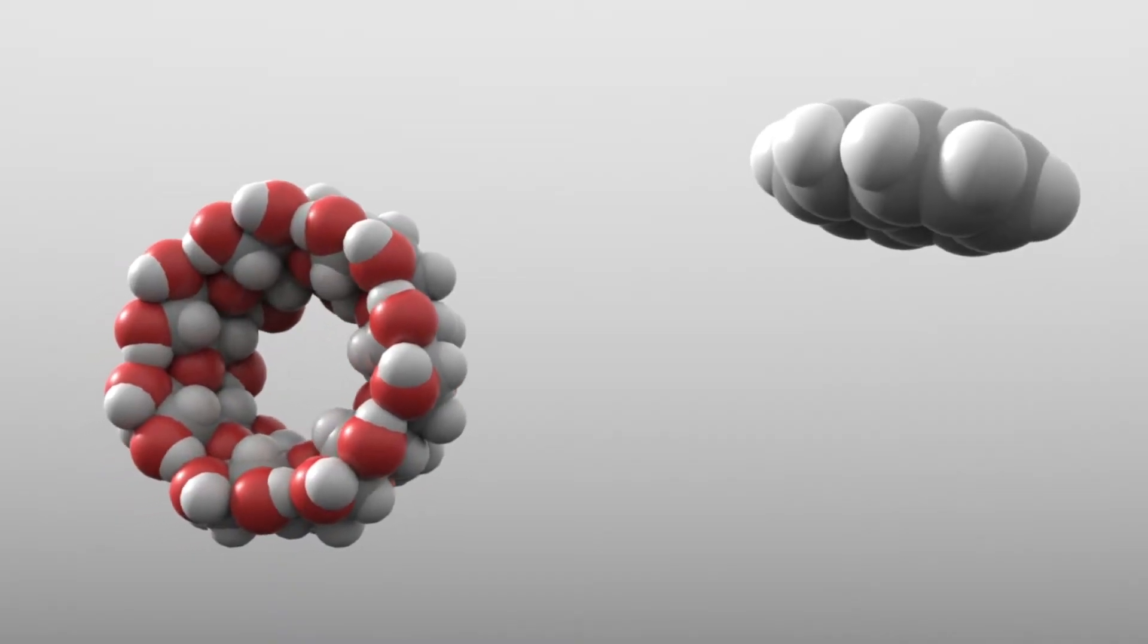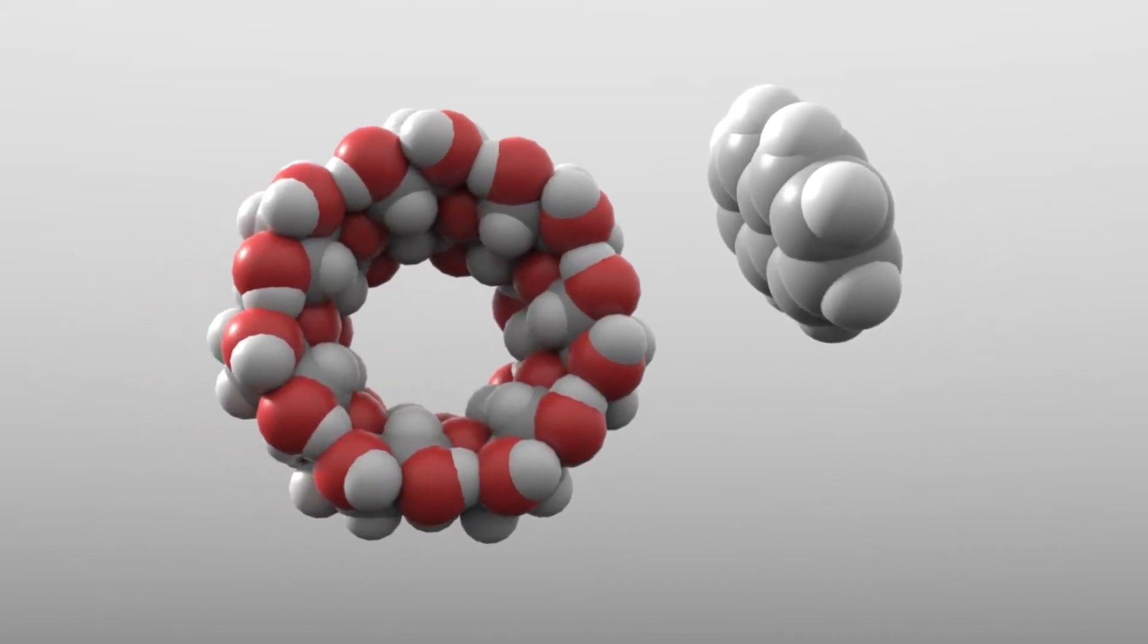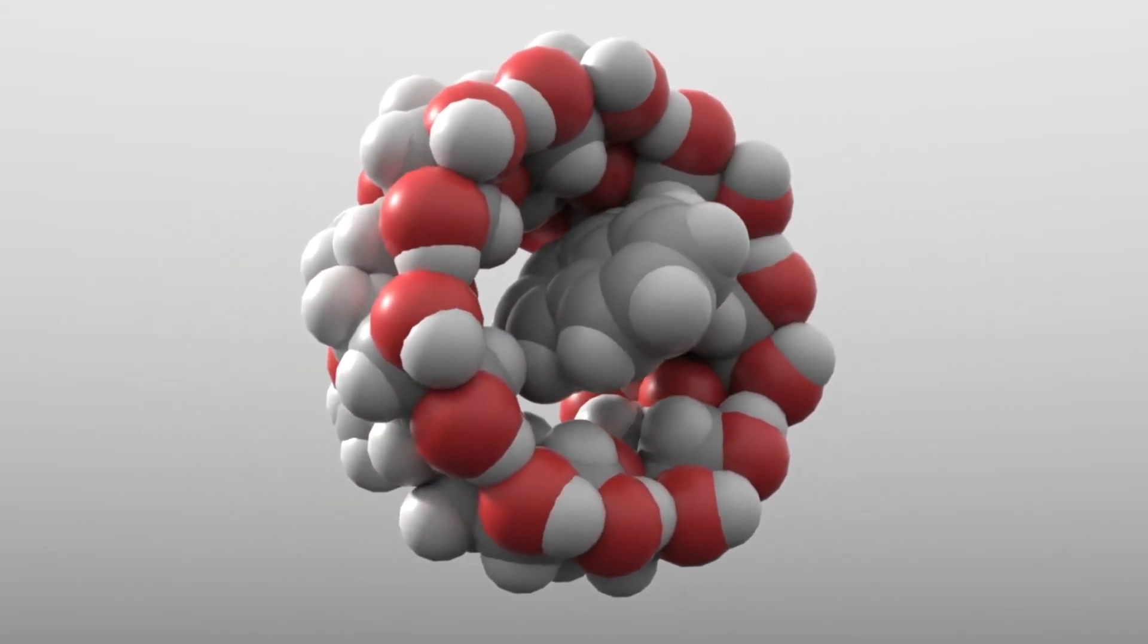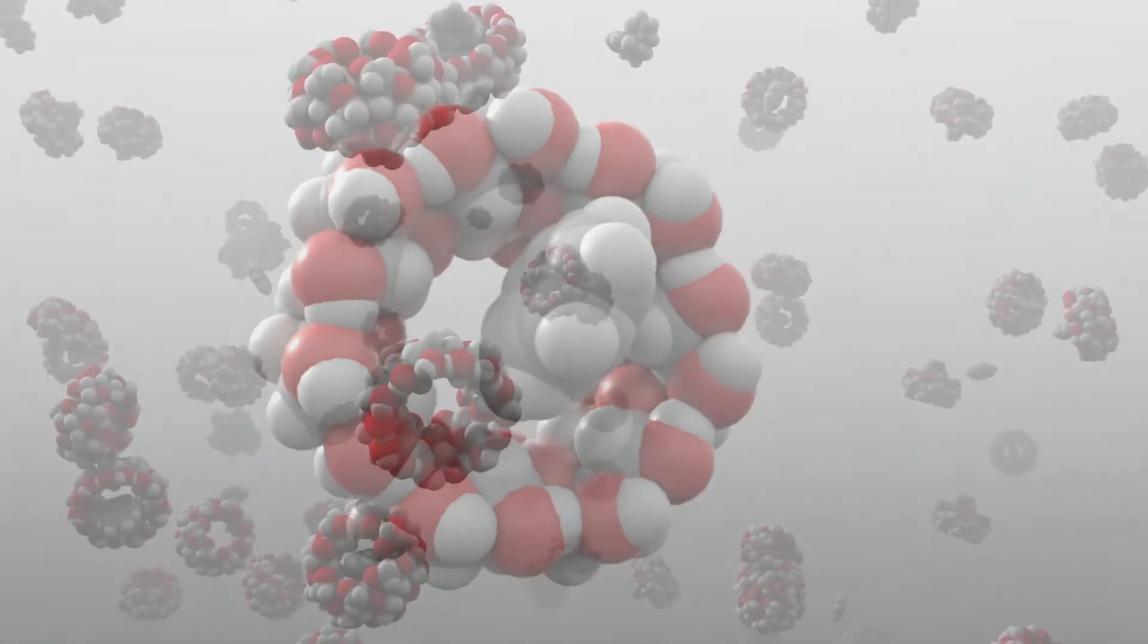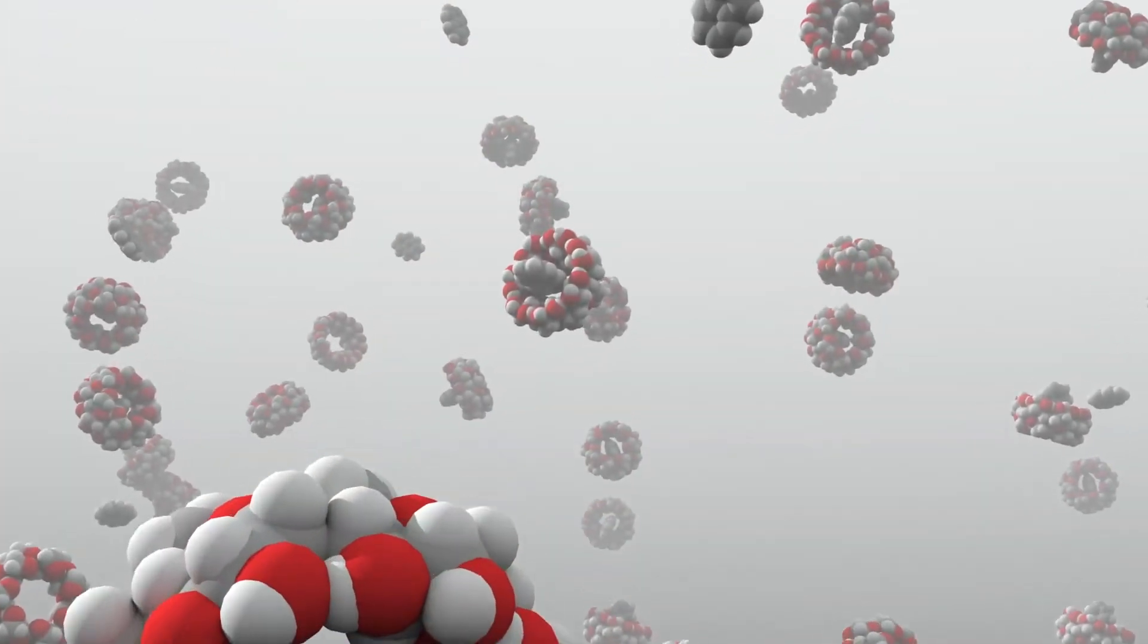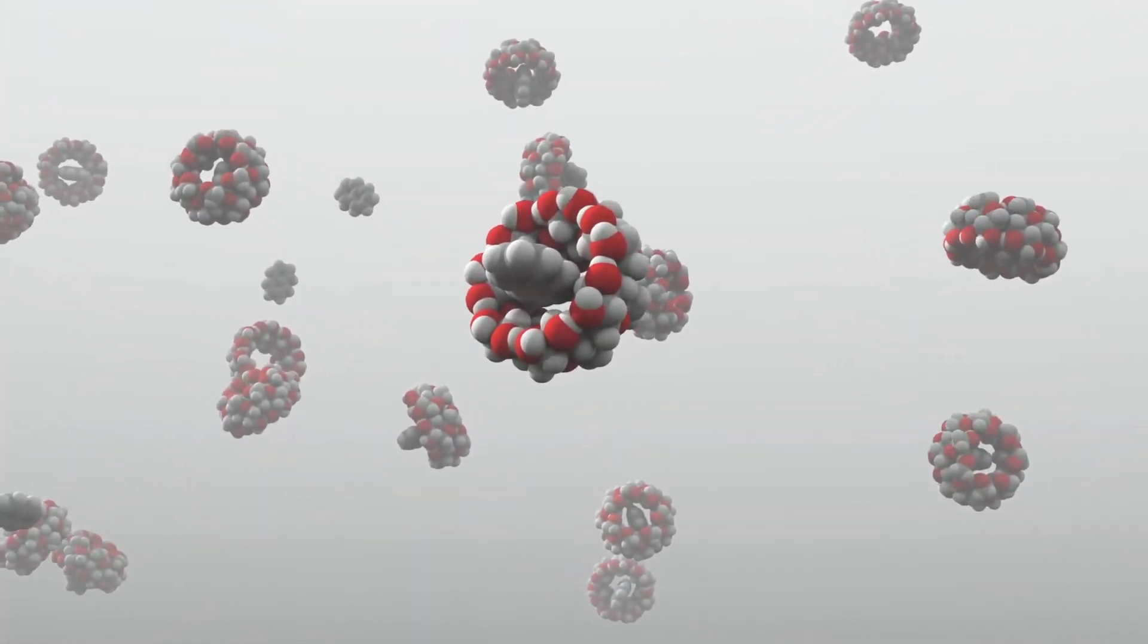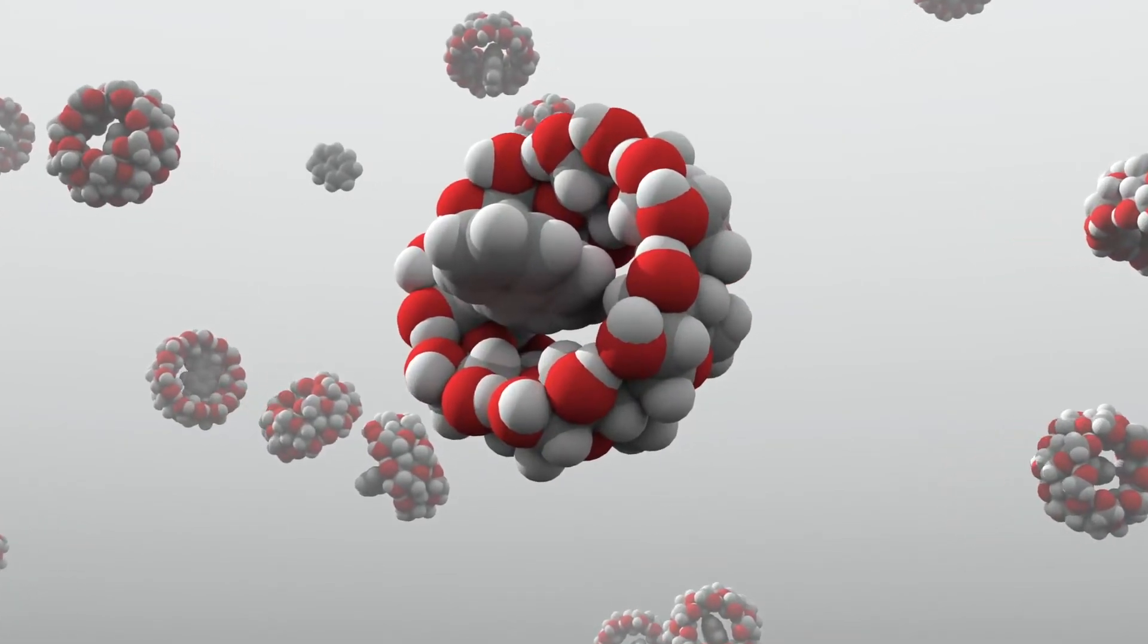When it's used in deodorizers, the hole inside cyclodextrin can trap unwanted odor molecules. When it's used in drugs, the hole can carry medicines that can then be delivered to the affected part of the body.